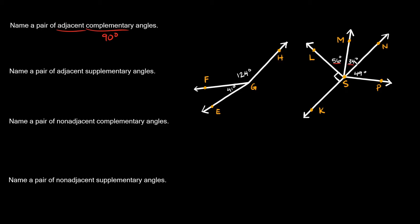56 plus 34 is equal to 90, so we know this is a right angle. These two angles — LSM and MSN — add up to 90 degrees. So a pair of adjacent complementary angles would be angle LSM and angle MSN.